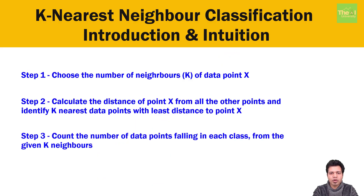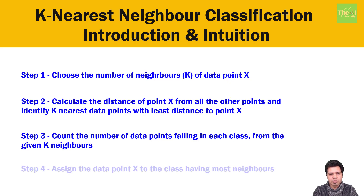Step 3: count the number of data points falling in each class from the given k neighbors. We find out how many data points are associated with class 1, how many with class 2, and if there is a third class, how many with that class — all from the given set of k neighbors. Step 4: assign data point x to the class having the most neighbors.